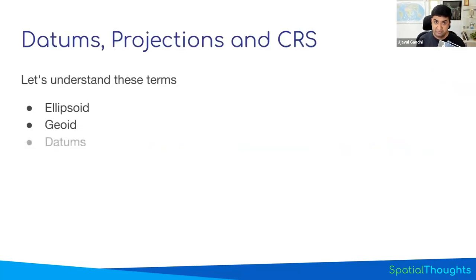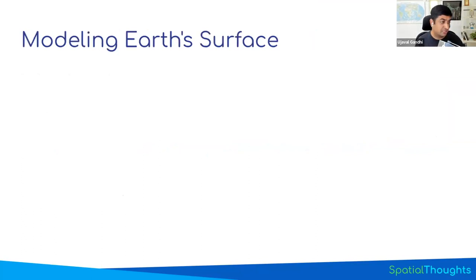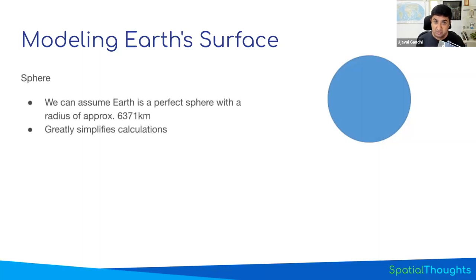I'll cover the concepts, and at the end of this video you should have a good understanding of these terms. GIS deals with mapping and analyzing phenomena happening on Earth, which means we need an accurate mathematical representation of the Earth's surface to analyze data in a computer system. One way is to assume the Earth is a perfect sphere and use that as a mathematical representation. This is a pretty good approximation — humans have known for centuries that Earth is a sphere. Currently, the best estimate of the Earth's radius is 6,371 kilometers.